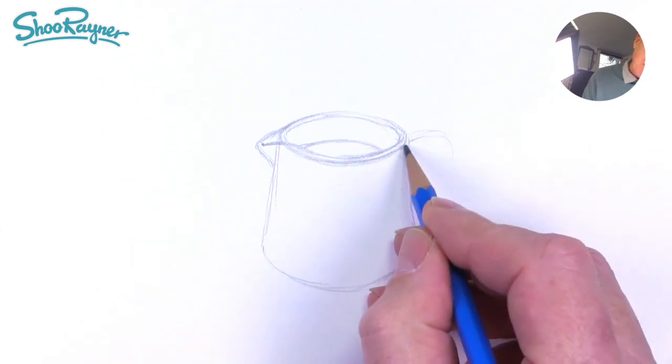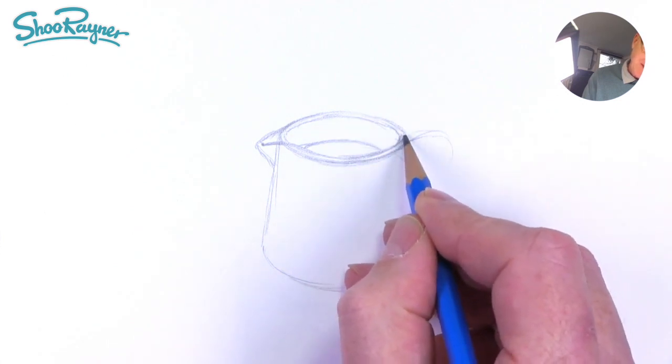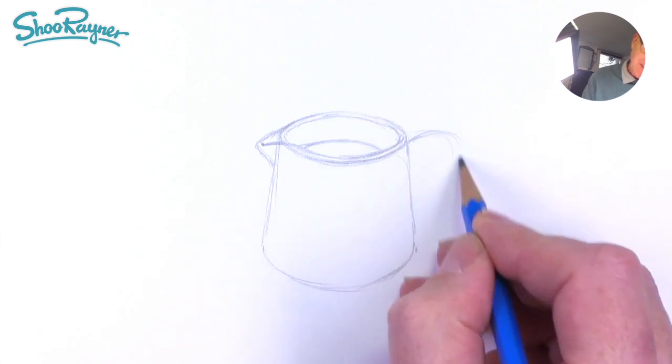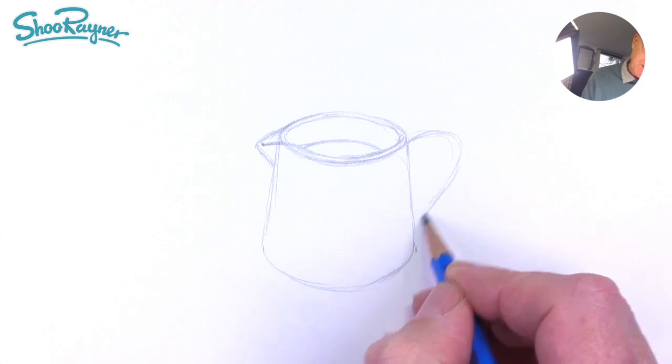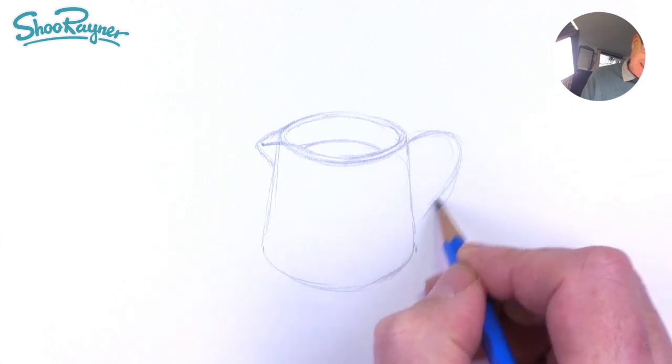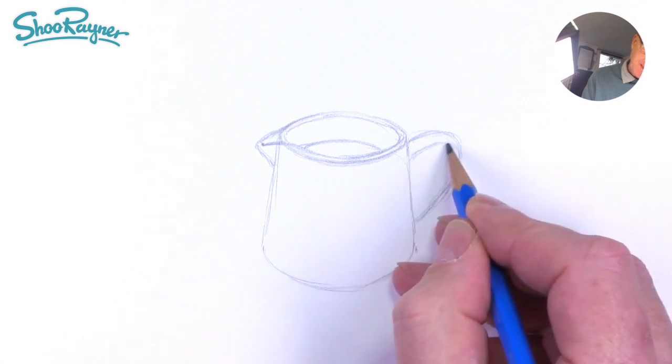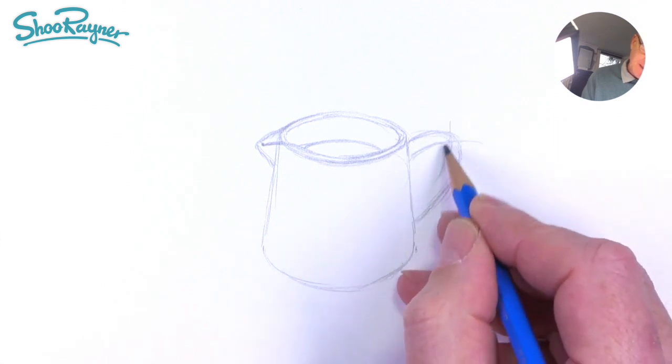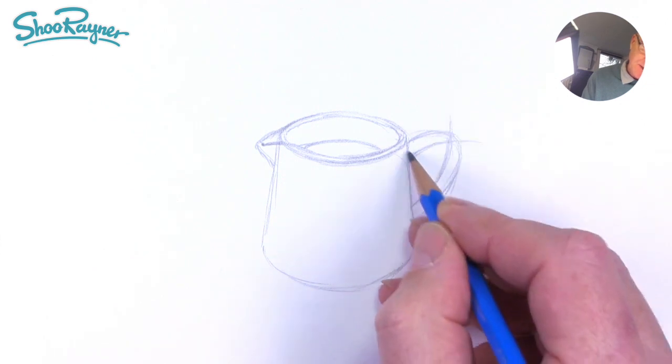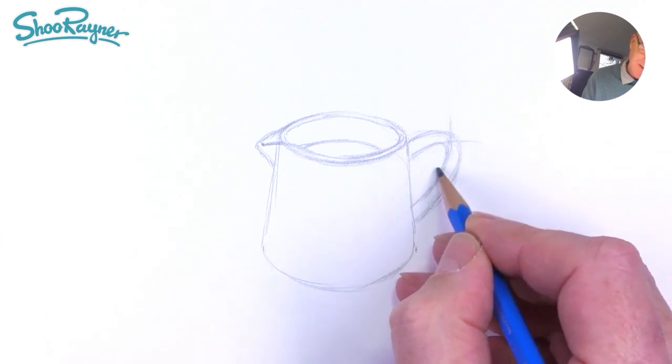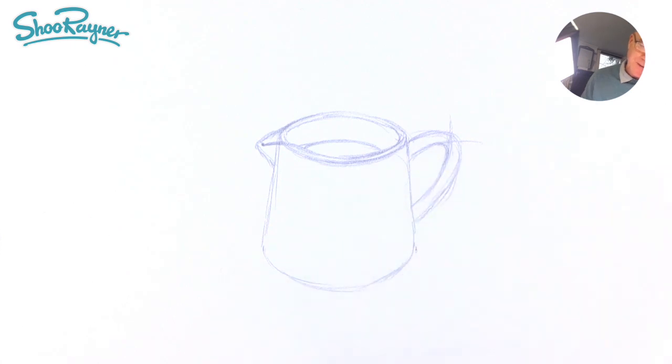And then let's pencil in where this handle is going to go. So just come around a little bit there. And then we want to... it's like an ear, isn't it, on the side. And then basically we're going kind of like that and like that. So it's kind of like a cross at the top, but then you want it to curve inside as well.